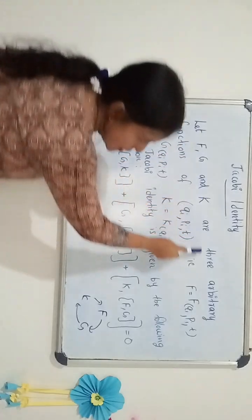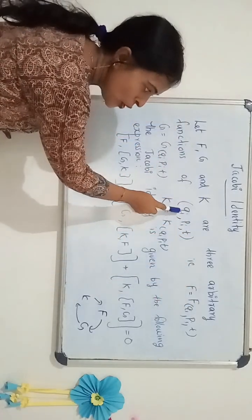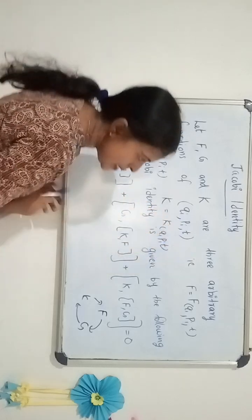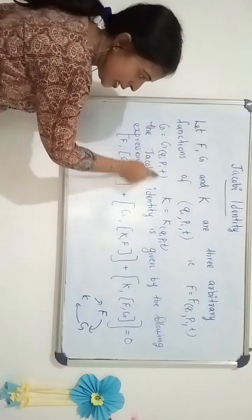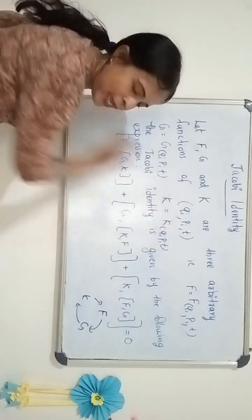Let F, G and K are three arbitrary functions of QI, PI and T. That is F is the function of QI, PI and T, and G is the function of QI, PI and T, and K is also the function of QI, PI and T.